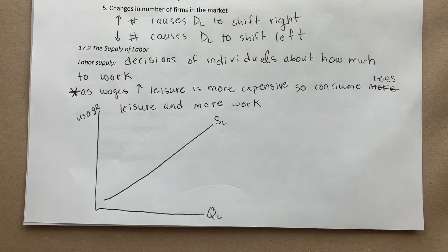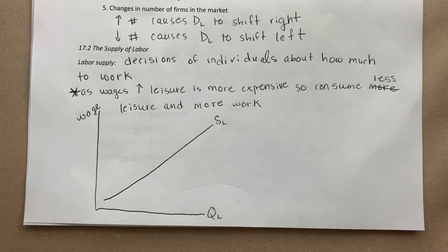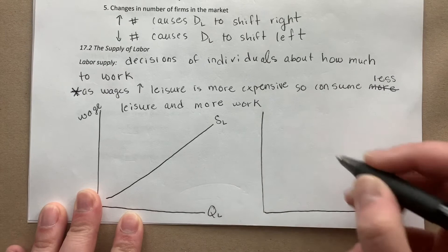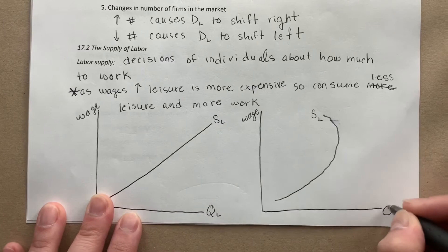However, if wages get really high, it might actually cause an individual to work less instead of more. For example, if a musician can make $5,000 per concert she may perform 50 concerts a year, but if she can make $50,000 per concert she may choose to perform fewer concerts. So the labor supply curve can also be backward bending — you hit a point where even if they're paying you more, you might actually produce less.